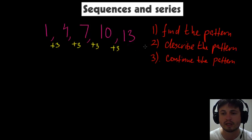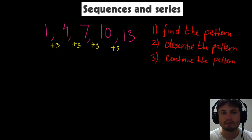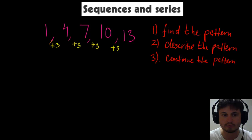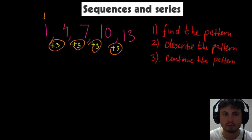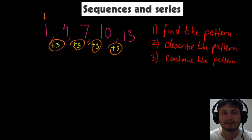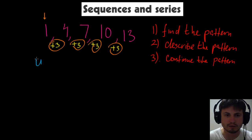For example, a question might ask you to find the tenth number in the sequence. To find it, you'd realize we keep adding plus 3, and the first number is 1. You'd need to find a mathematical representation for this. In mathematical terms it would be written as u10 equals unknown — a question mark we need to solve.